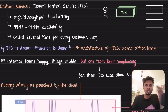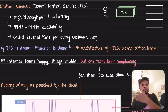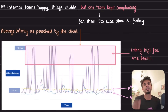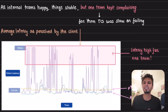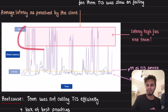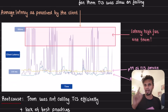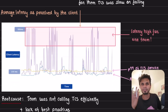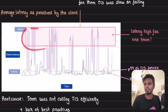A lot of internal products at Atlassian — Bitbucket and others — are using the TCS service. One team was unhappy and kept complaining that the service was not performant. You can clearly see from the graph where the observed average latency for that specific team was very high. They complained: either it's slow or it fails.